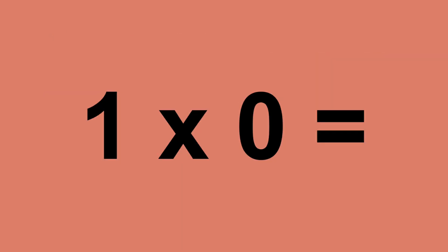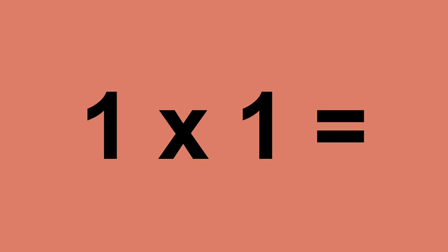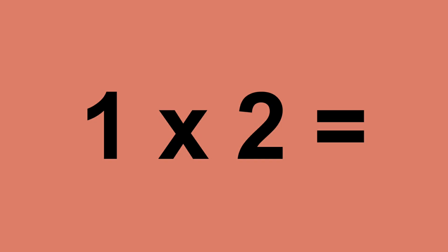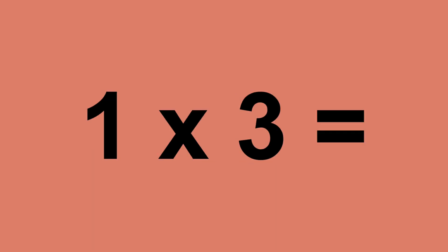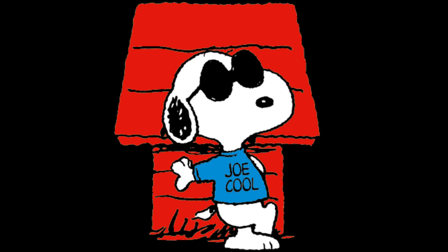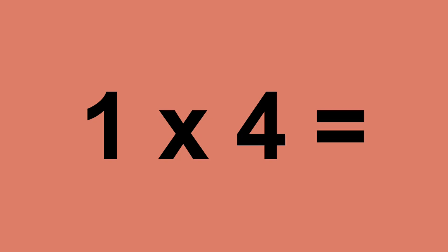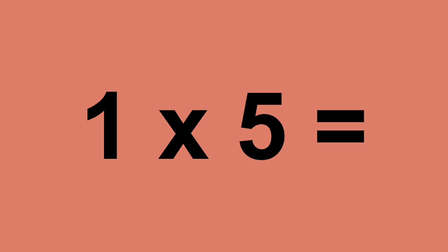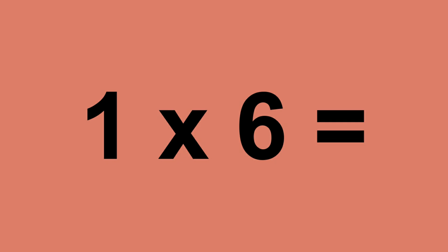1 times 0 equals 0. 1 times 1 equals 1. 1 times 2 equals 2. 1 times 3 equals 3. 1 times 4 equals 4. 1 times 5 equals 5. 1 times 6 equals 6.